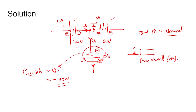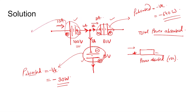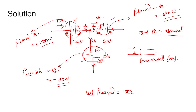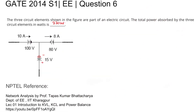For the second element, the plus terminal is here and current is coming inside, so it is absorbing power — positive. For the third element, the plus terminal is here and current is coming out, so it is delivering power; P absorbed is negative, equal to minus 8 times 80, which is minus 640 watts. The first element is absorbing, so P absorbed is positive: plus 1000 watts. Net P absorbed equals 1000 minus 30 minus 640, which is 330 watts. The answer is 330 watts.